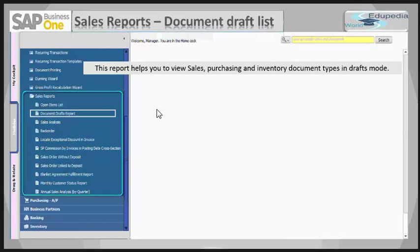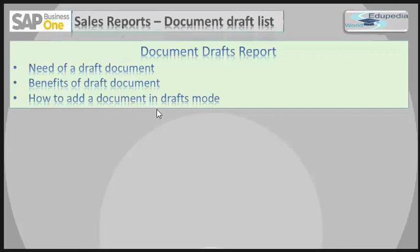In SAP Business One you can save most documents as drafts. This lets you change and process them before adding them within the system. This may be required because the document is only partially filled out and will be completed later, or perhaps you need someone else's help to fill the document completely. This report is very useful for these purposes.